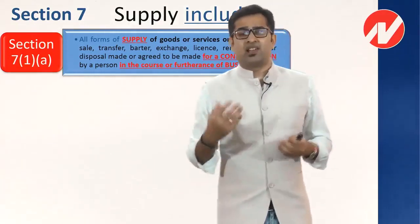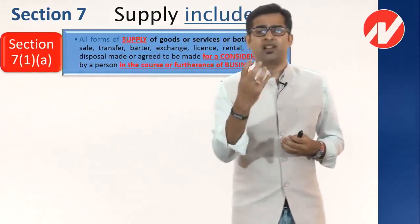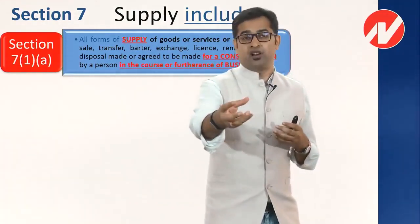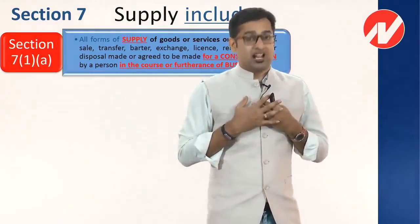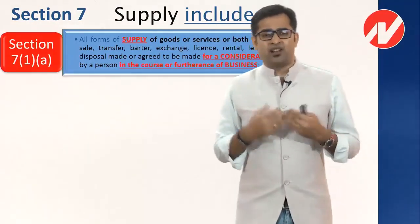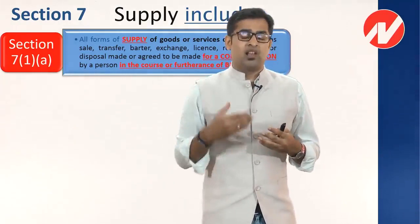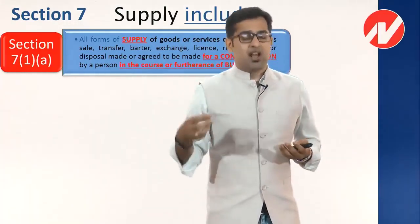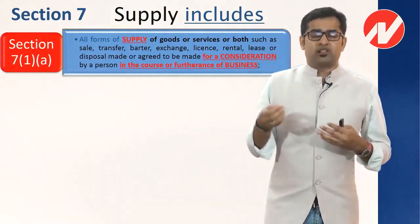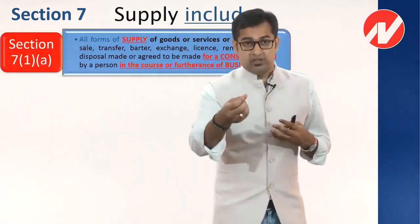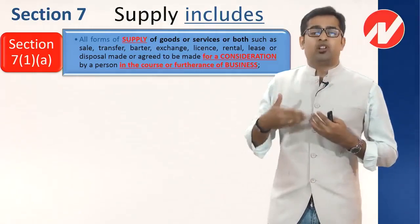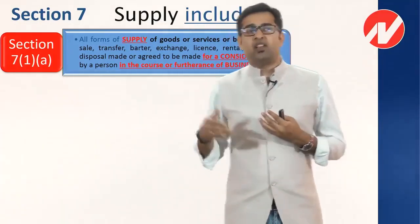Licensing is allowing someone to use your intellectual property. It relates to IPR — Intellectual Property Right. When I have an IPR and I give someone the right to use it, I am giving them a license. For example, Navkar has more than 10-15 franchises across India — we allow each franchisee to use our name, and they give us consideration for that. That is franchising, which is a clear example of licensing.